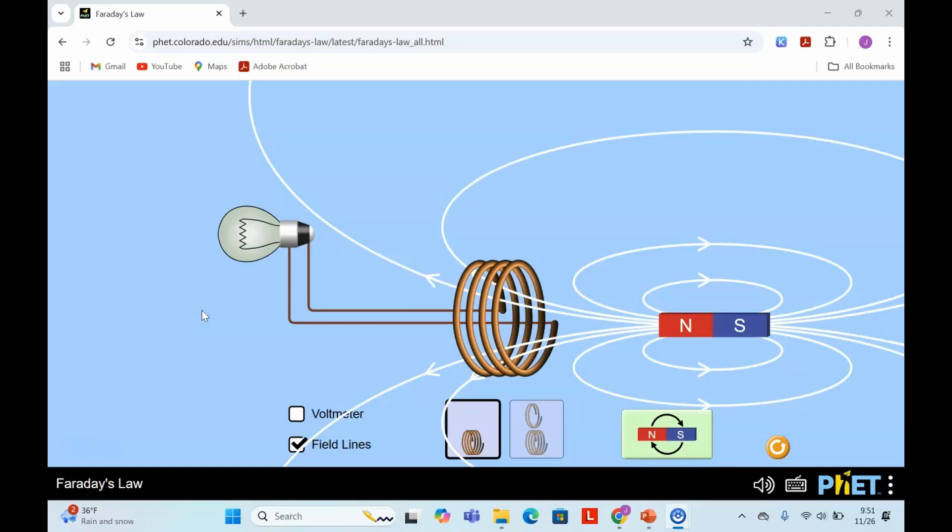This is a simulation from PhET developed at the University of Colorado at Boulder. This is a bar magnet. The magnetic field lines leave the north pole and they enter the south pole.